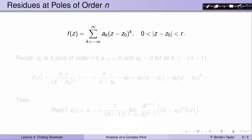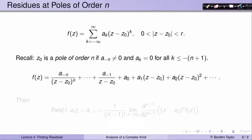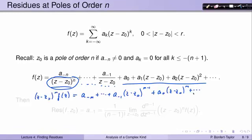Let's generalize these ideas. Suppose we're dealing with a pole of order n. That means the a_{-n} term is non-zero and all a_k's for k ≤ -(n+1) are equal to zero. So the function looks like a_{-n}/(z minus c0)^n plus terms where the denominator improves, all the way through a_{-1}/(z minus c0), plus non-negative powers of (z minus c0). We multiply through by (z minus c0)^n to get a_{-n} plus a_{-(n-1)}·(z-c0) plus ... plus a_{-1}·(z-c0)^{n-1} plus a_0·(z-c0)^n and so forth.